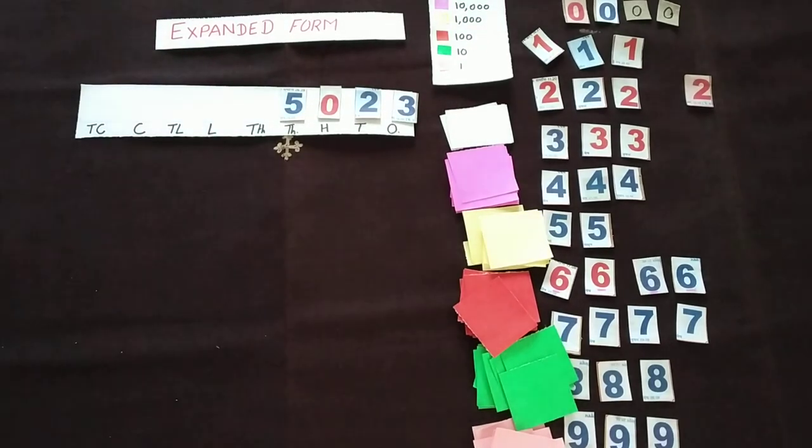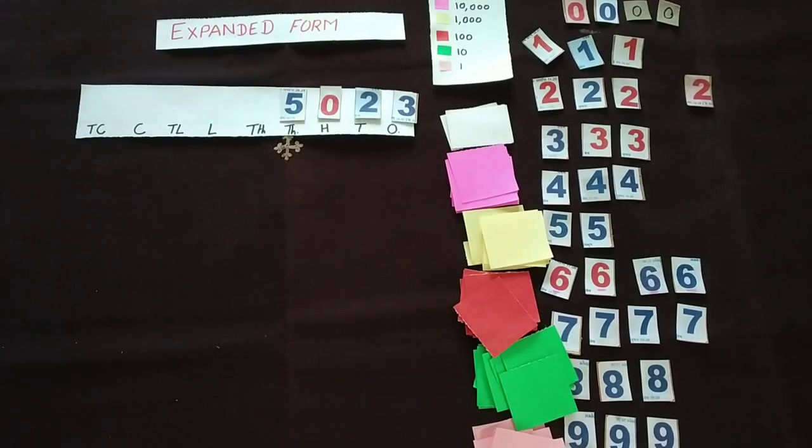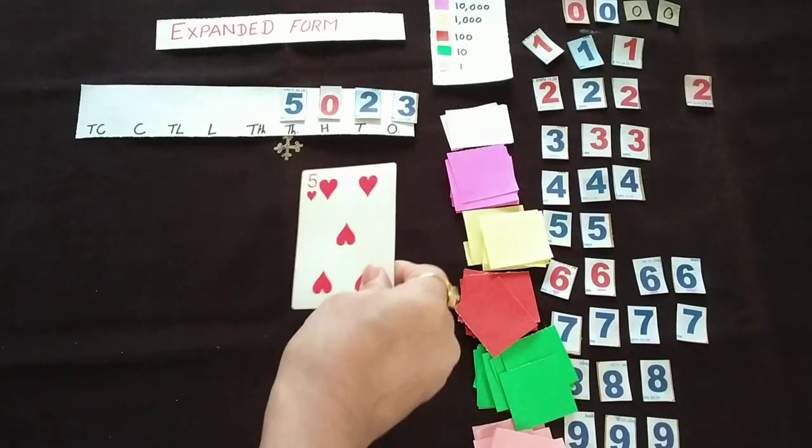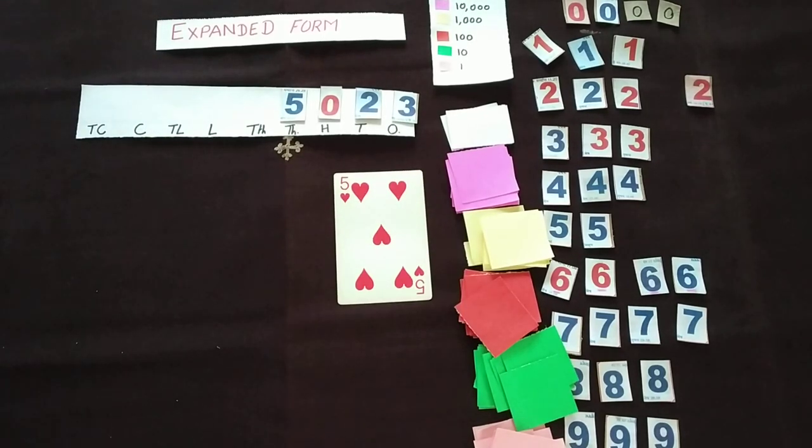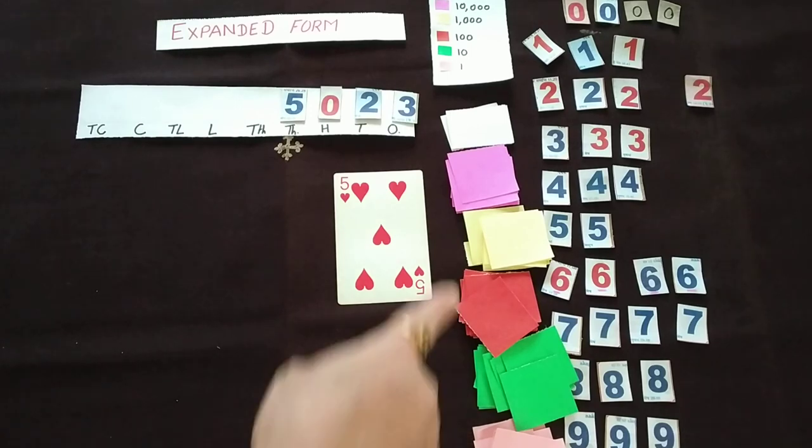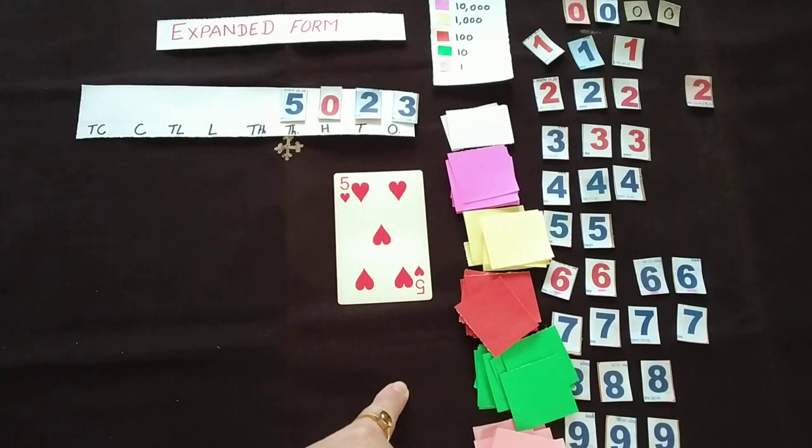As soon as the child will put the first card, so we know that the first one is the ones place. So another group member will collect 5 ones place, that is pink color sheets, and the child will arrange here.